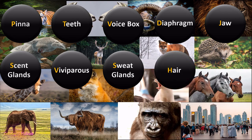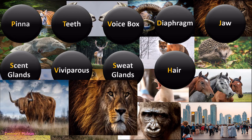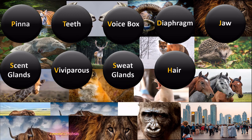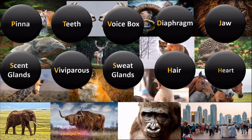The next feature is hair, which is a very unique and famous feature of mammals. All earlier animals had either scales or feathers on their body, but mammals have hair. Hair serves two basic important functions: thermoregulation and protection.